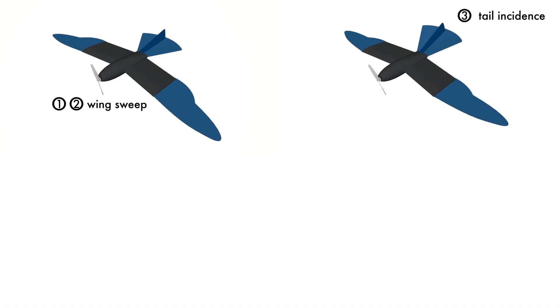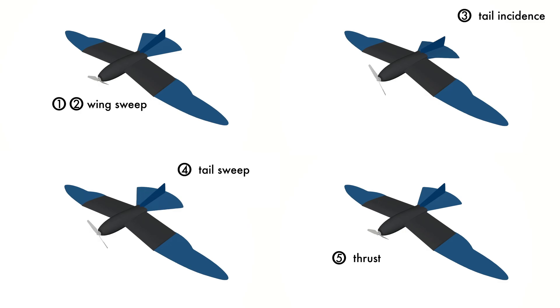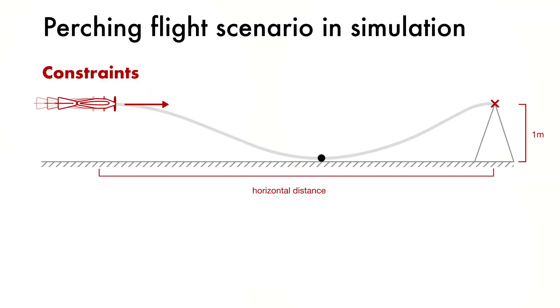Here we test this hypothesis by means of control optimization on an avian-inspired drone. We recreate the scenario used in the bird studies, where the drone flies with an initial velocity and minimizes its flight speed on impact and the distance flown at high angles of attack.